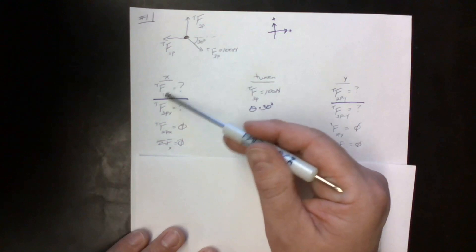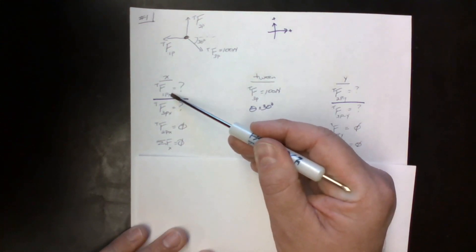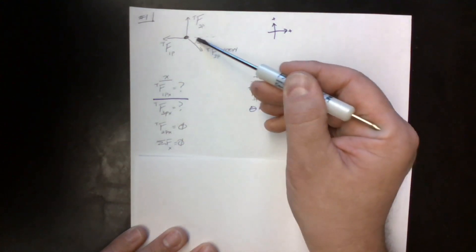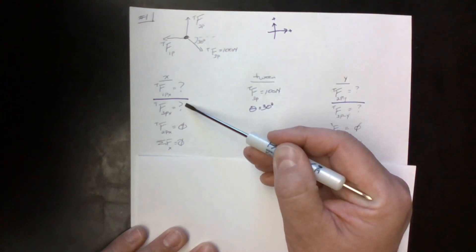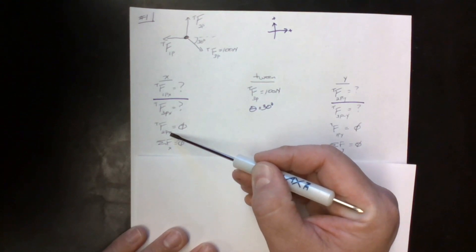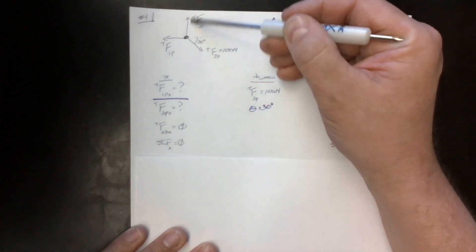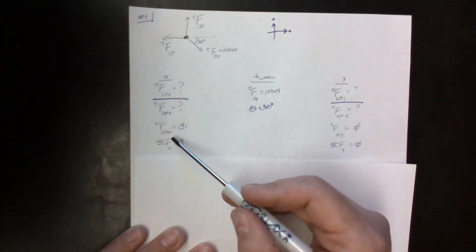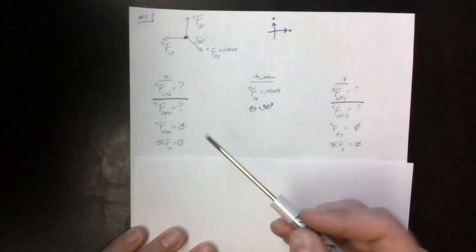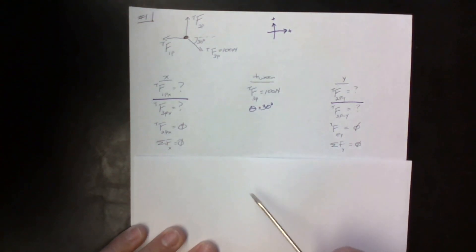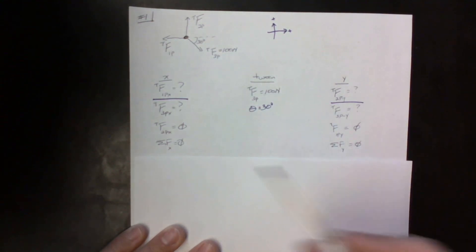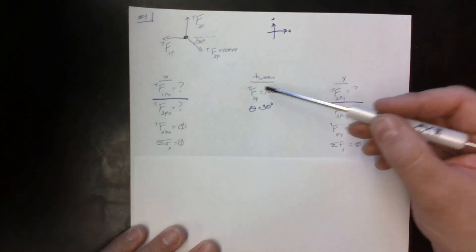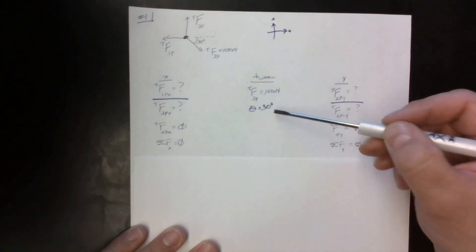I've got the tension force that rope one exerts on the point in the x direction — don't know that. The tension force that rope three exerts on the point in the x direction, the x component of that force — we don't know that either. The x component of rope two on that point is zero, since it's pretty much straight up. The problem tells us those ropes are horizontal, vertical, and at right angles to each other, and the object doesn't move — meaning velocity is constant, so total force in the x direction is zero. Rope three is 100 newtons at 30 degrees.